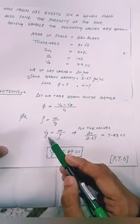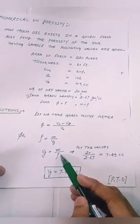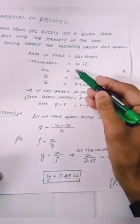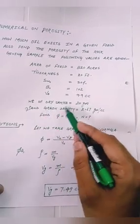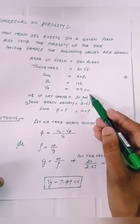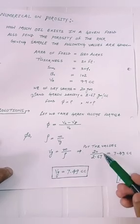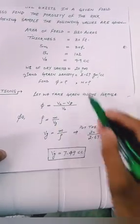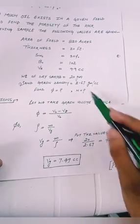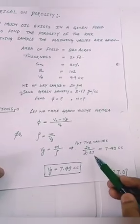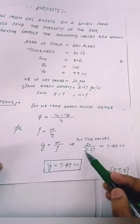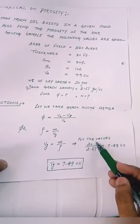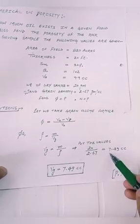So grain volume we will find first of all. Grain volume equals mass per unit density. So put the value. Mass, how much mass? Weight of dry sample, this is a mass, 20 grams. And sand grain density, 2.67 grams per cc.